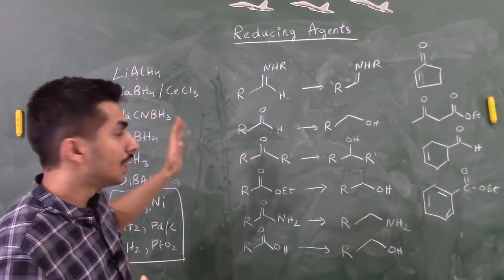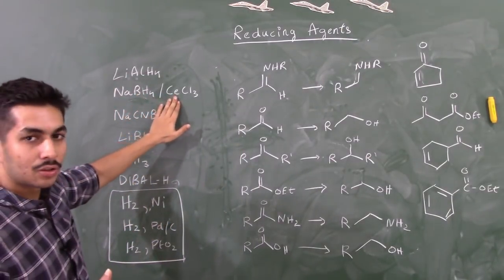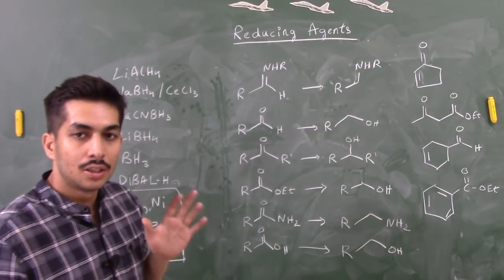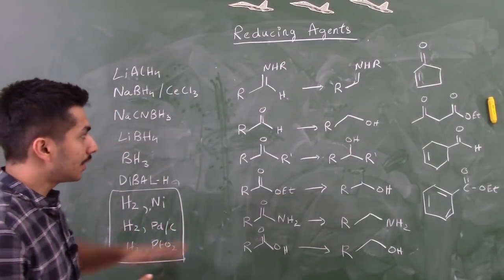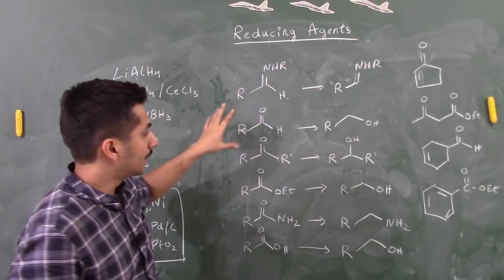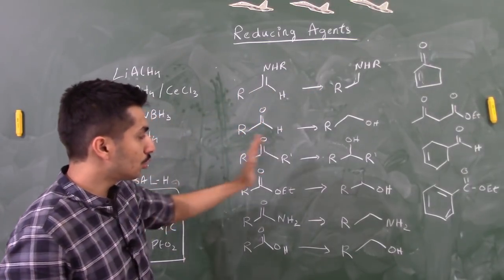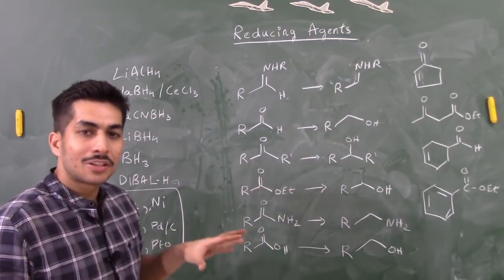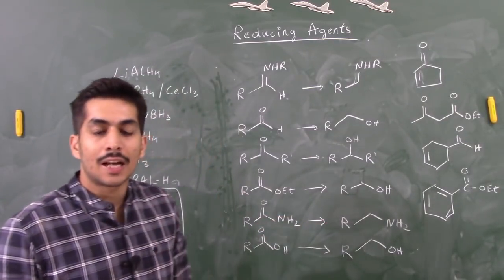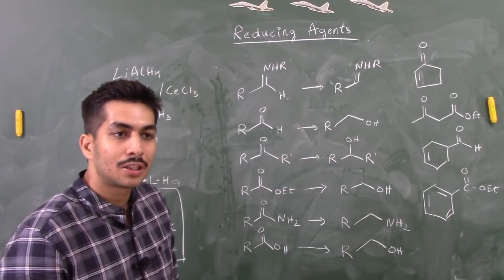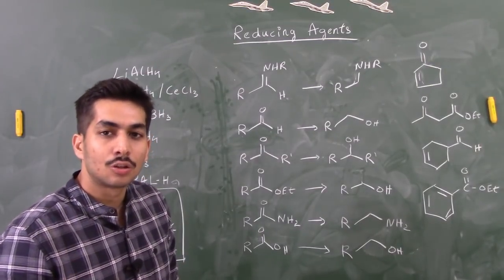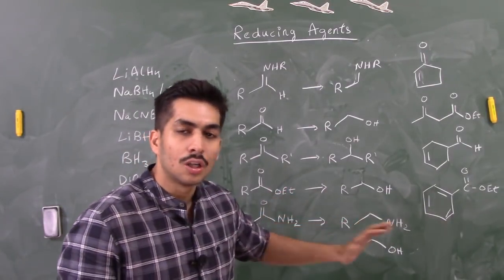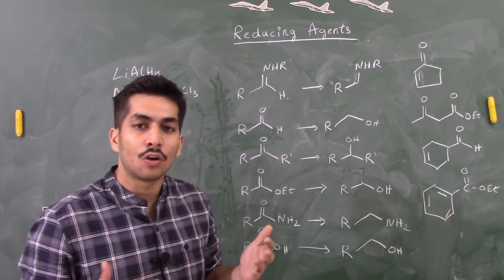Next is Sodium Borohydride (NaBH4) — and separately, NaBH4 with cerium trichloride, which has a different role. Pure sodium borohydride can reduce imines to amines, aldehydes to alcohols, and ketones to alcohols. It cannot easily reduce esters, amides, or carboxylic acids. It can reduce esters to some extent, but the reaction is extremely slow.